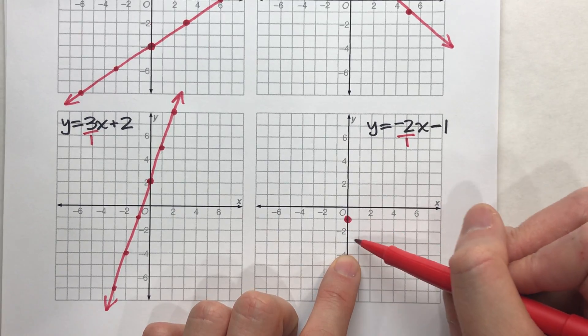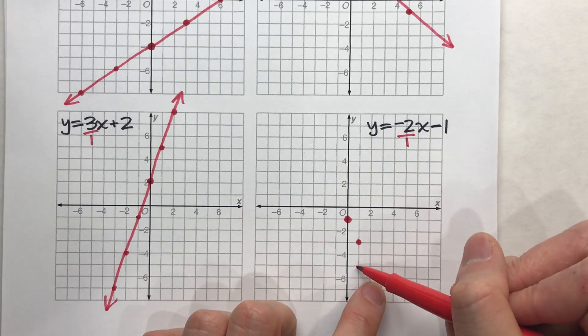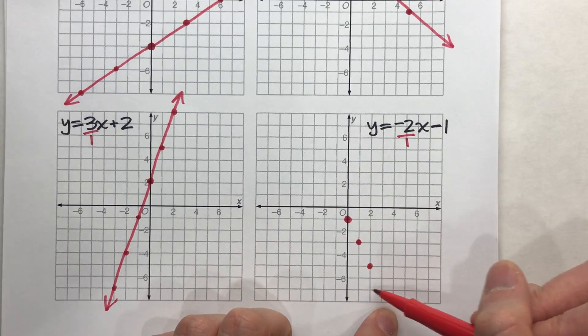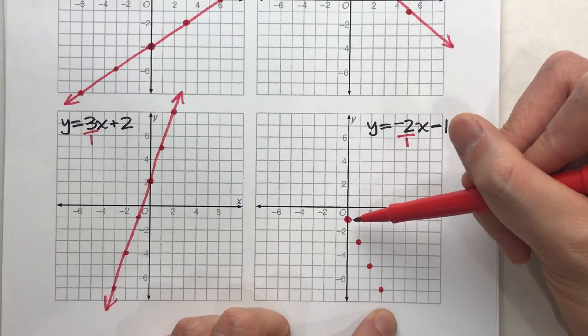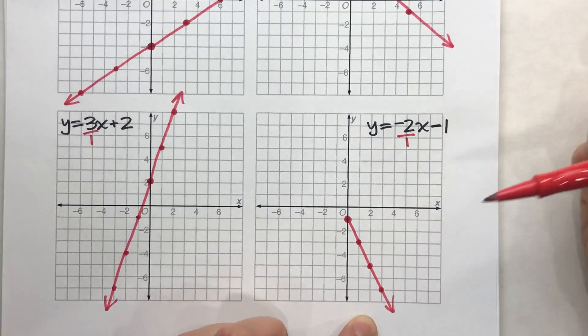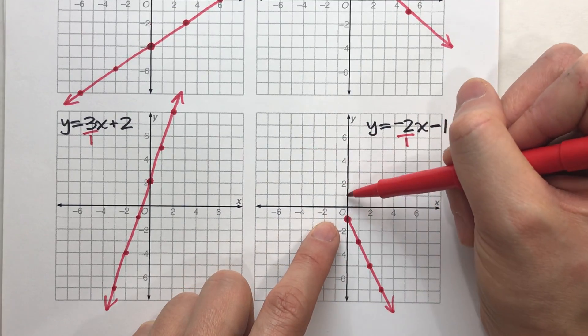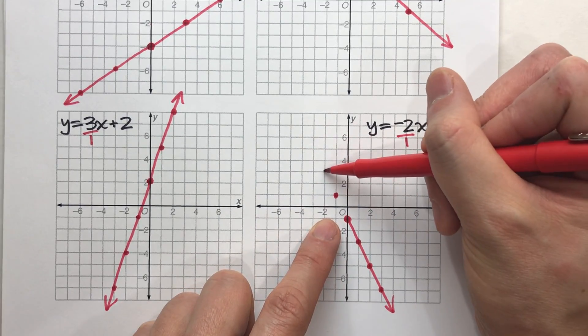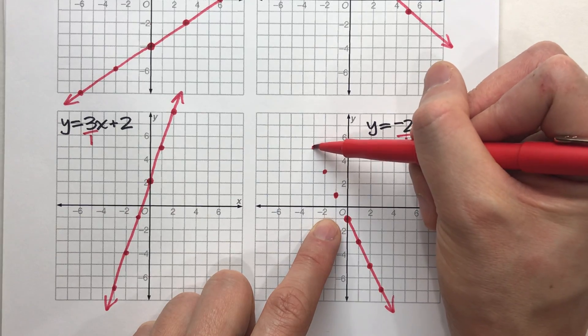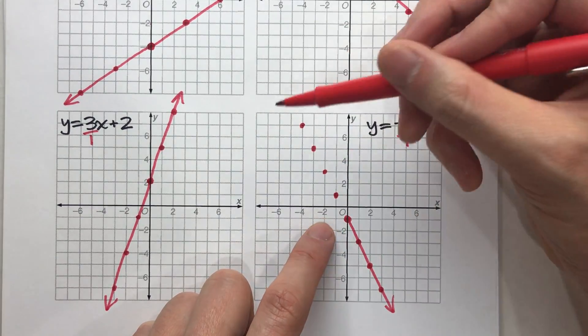Down two, right one. Down two, right one. And look, I know what my line looks like. And again, I always continue it the other way too. Up two, back one. Up two, back one. Up two, back one. And you can kind of see what this line's going to look like. There it is.